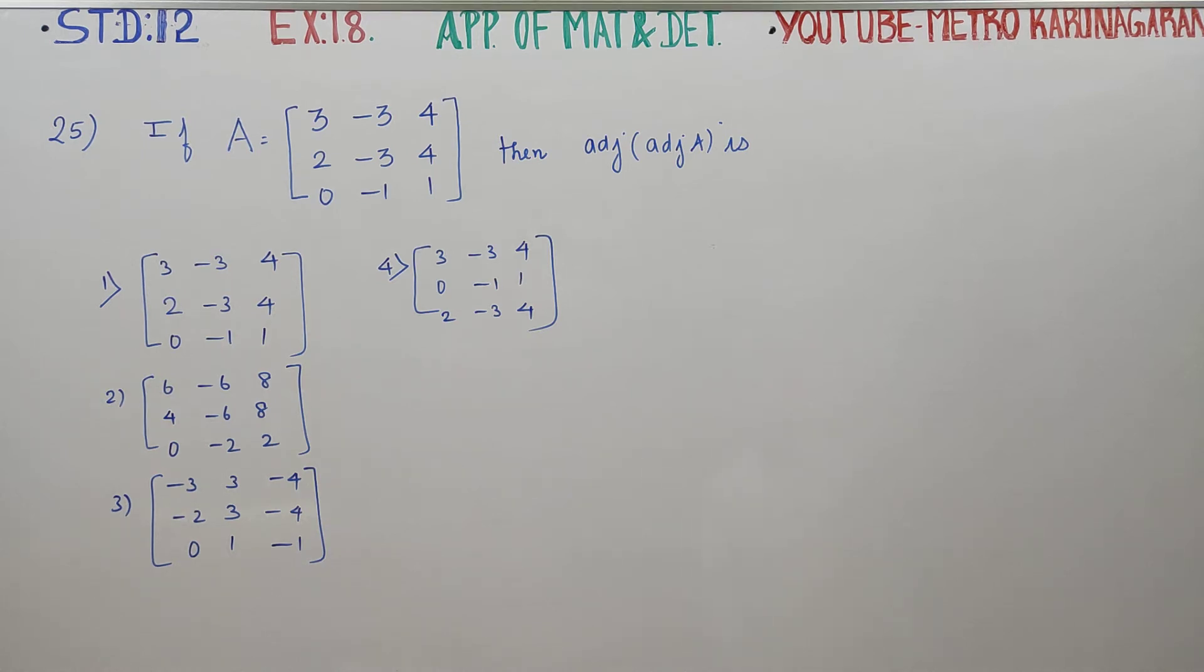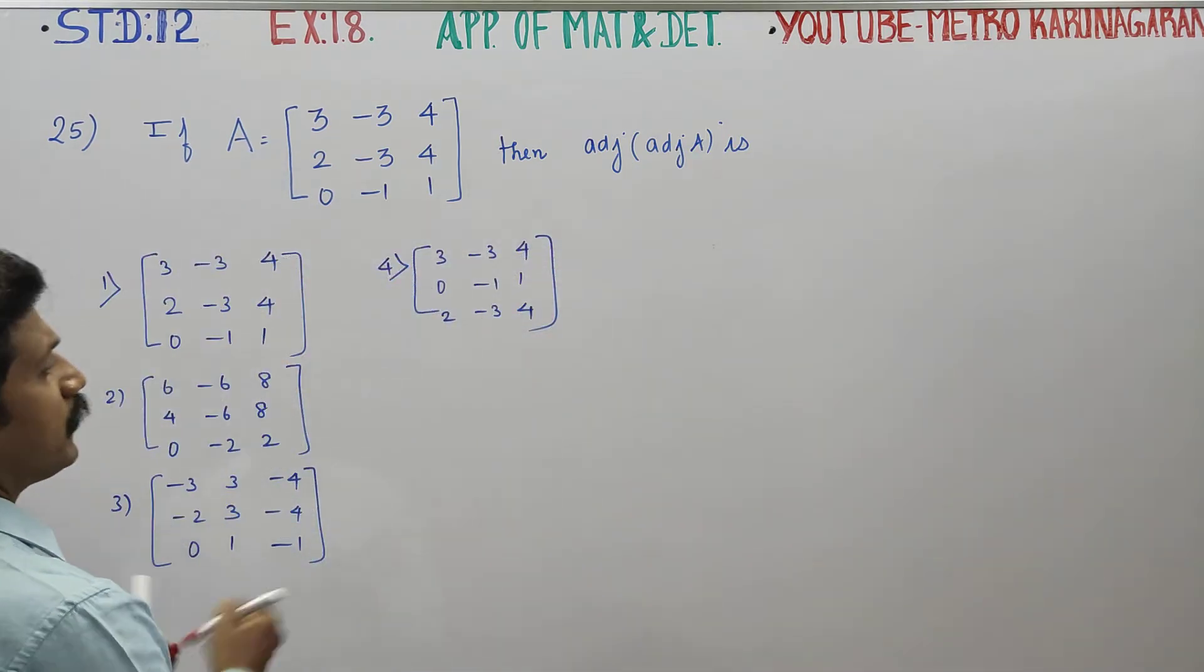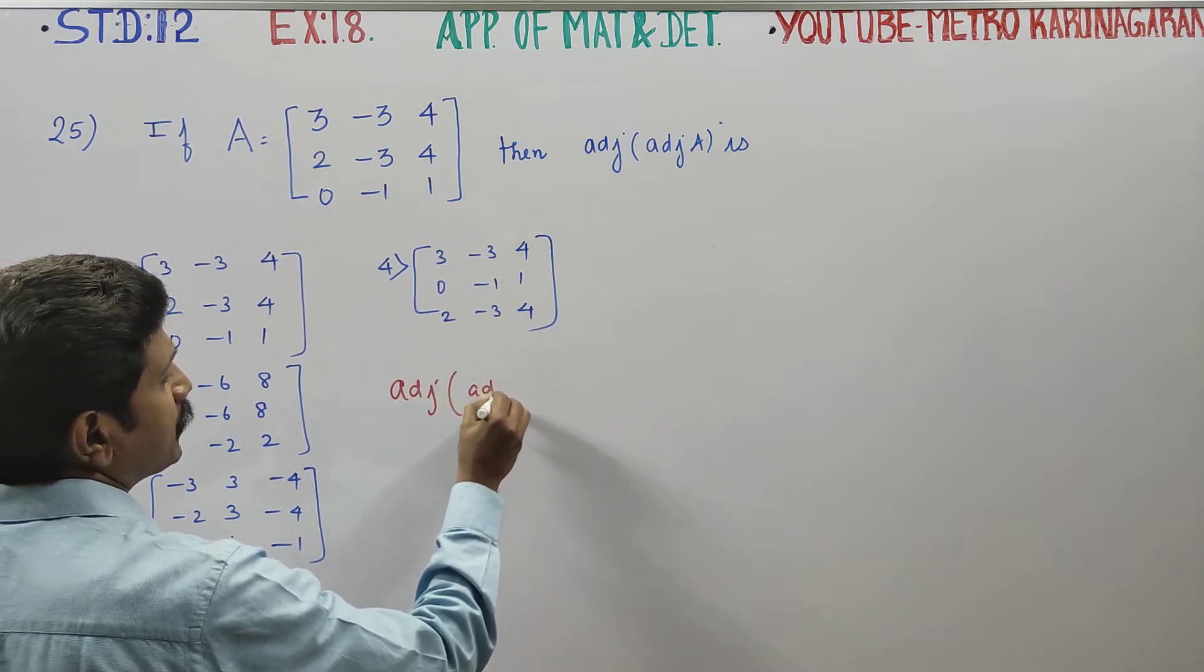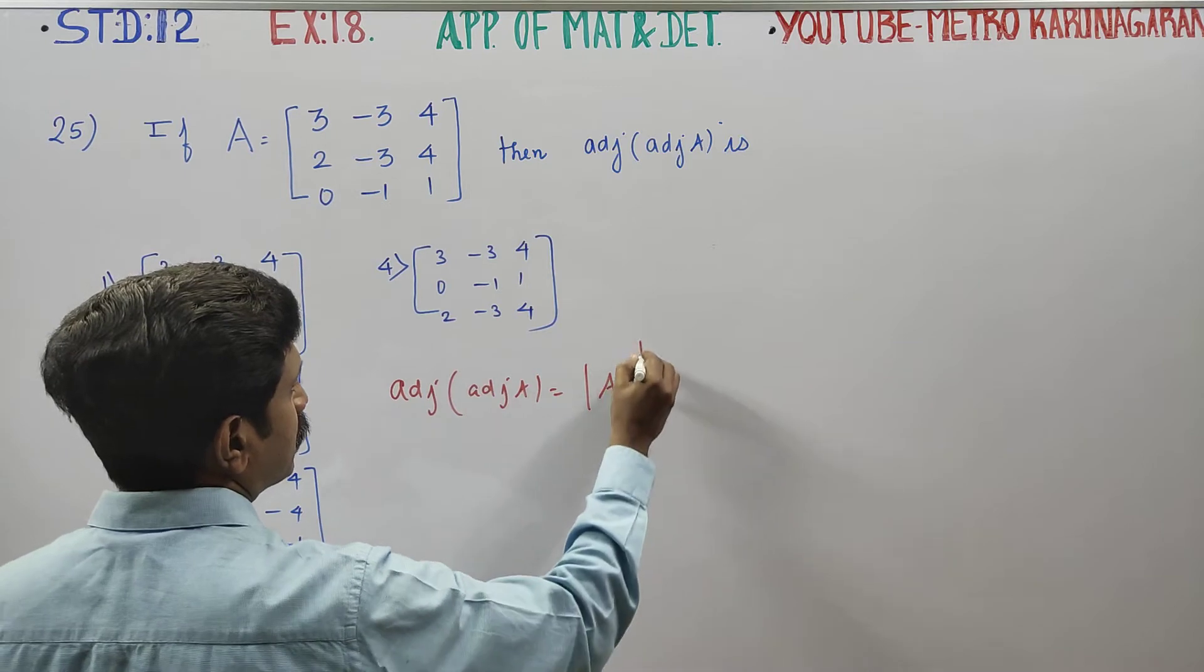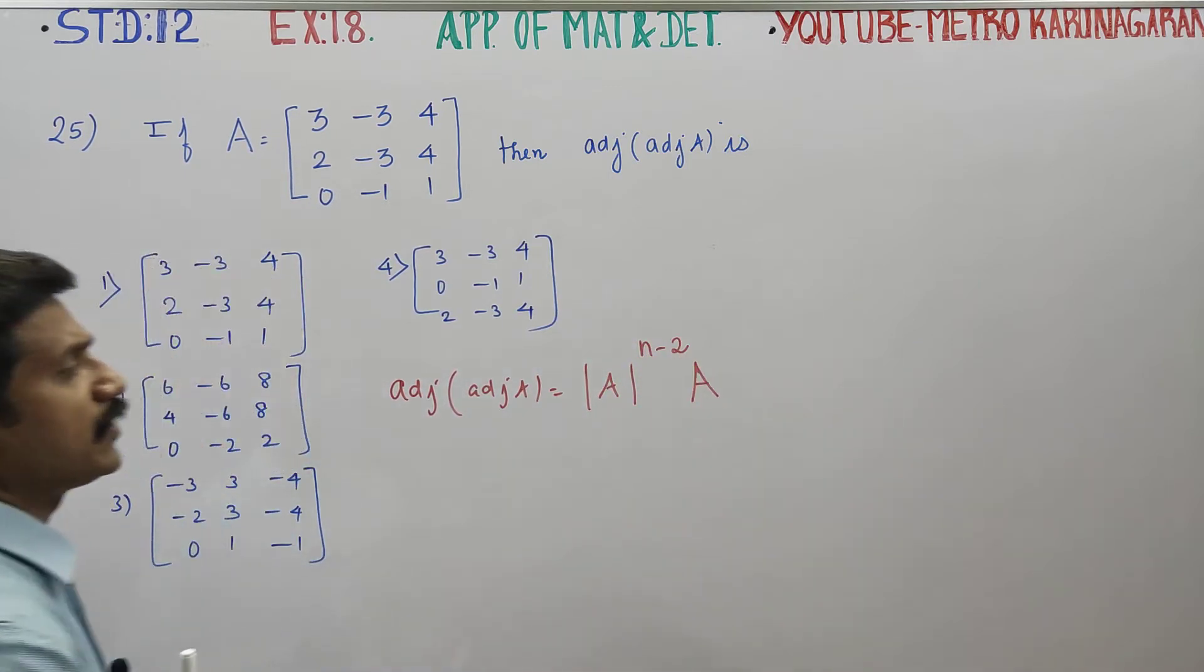Dear 12th Standard students, in exercise number 1.8, sum number 25, find the value of adjoint of adjoint A. The formula for adjoint of adjoint A is determinant A power n minus 2 into A. This is the formula.